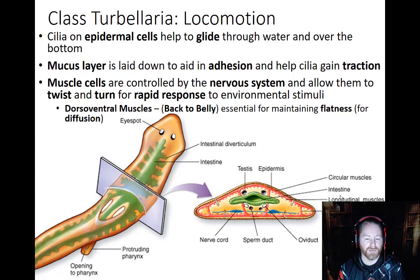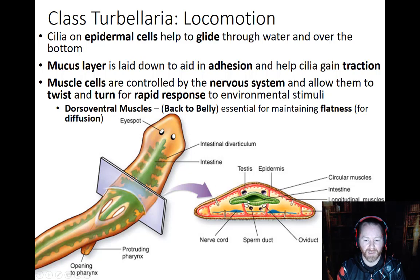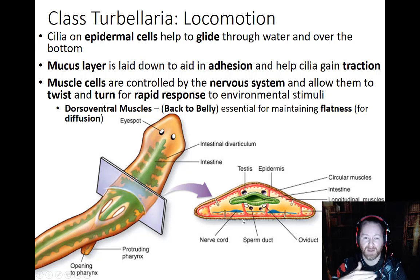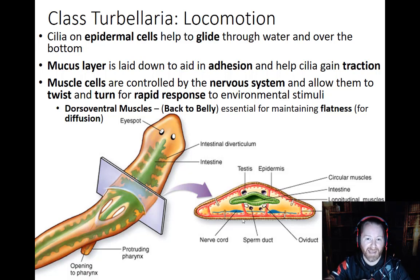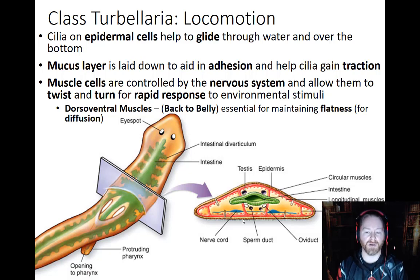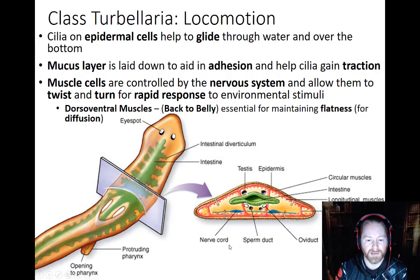For locomotion, they have cilia on their epidermal cells that help them glide through the water. They also have dorsal-ventral muscle layers that help keep a flatworm flat by pulling the dorsal side down toward the ventral. They must stay flat because they rely on diffusion for gas exchange and some excretion — if they were thick and rounded, the inner cells would be too far from the surface for effective diffusion.